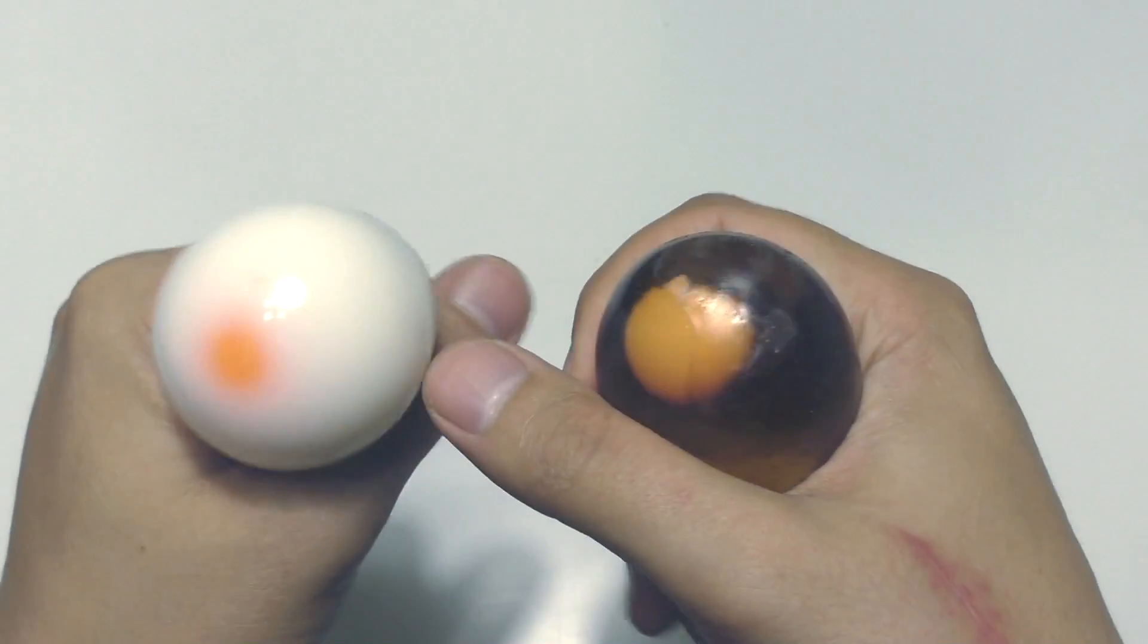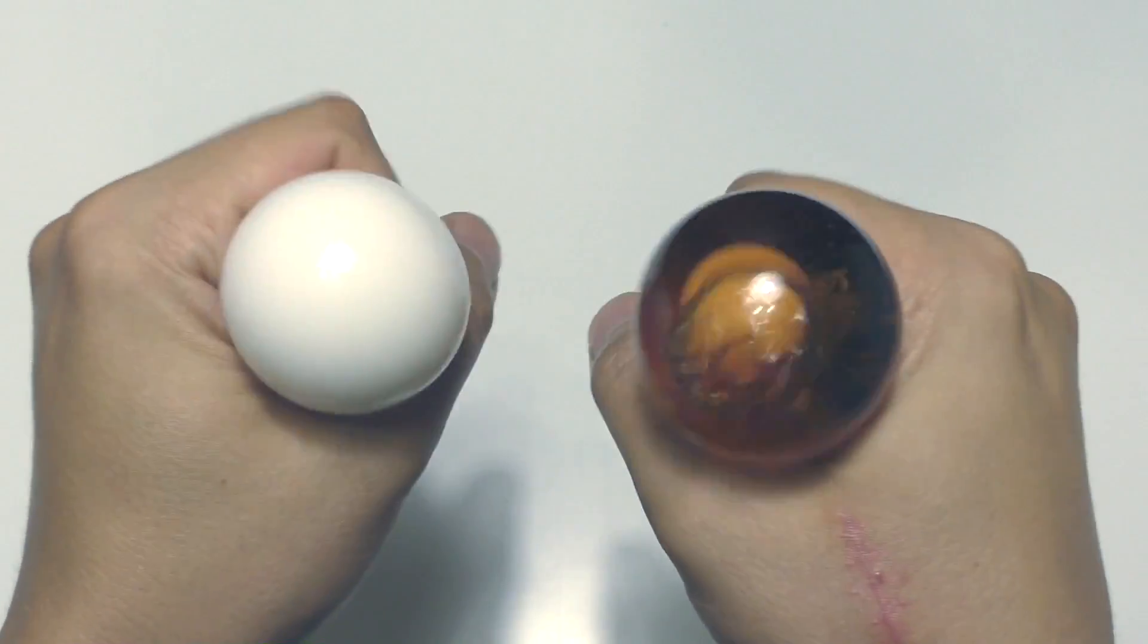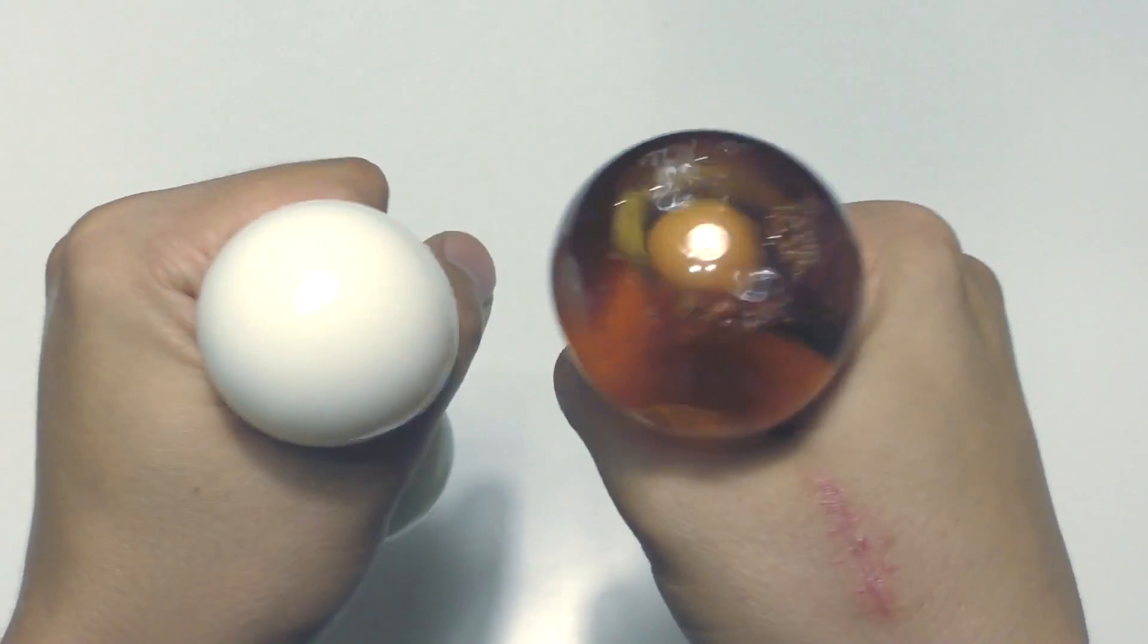Now let me show you in slow motion what will happen if you throw such an egg on a solid surface.